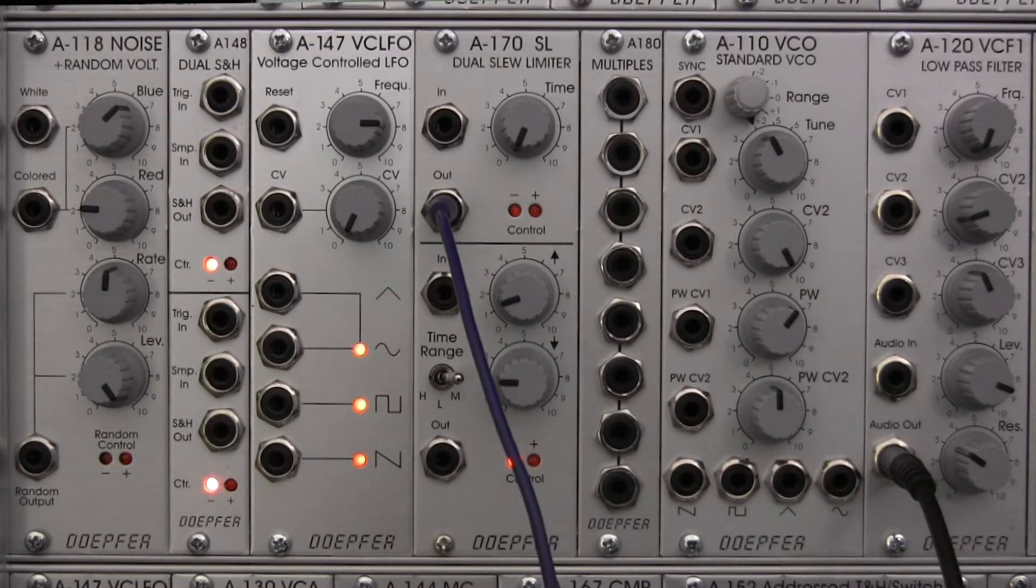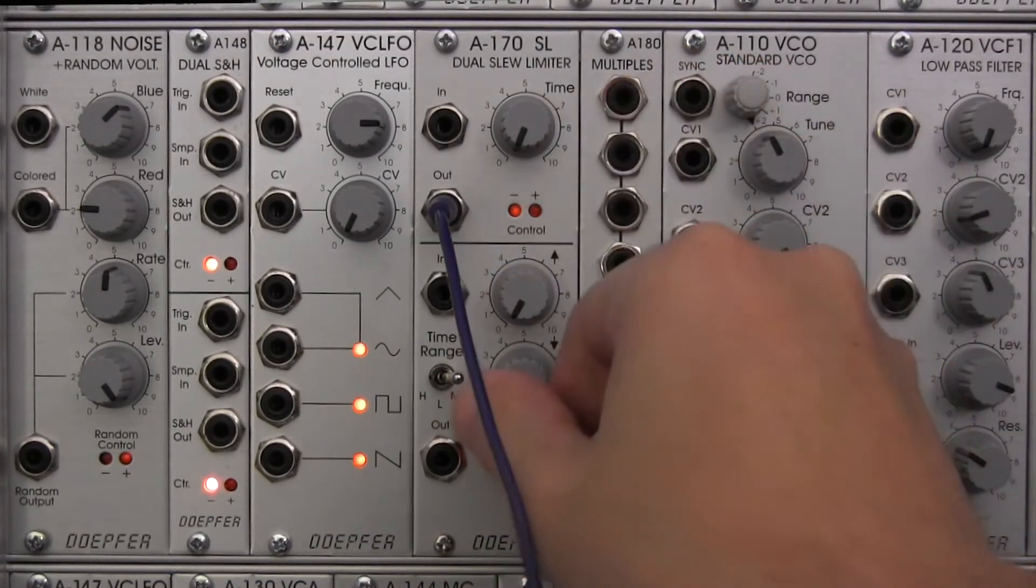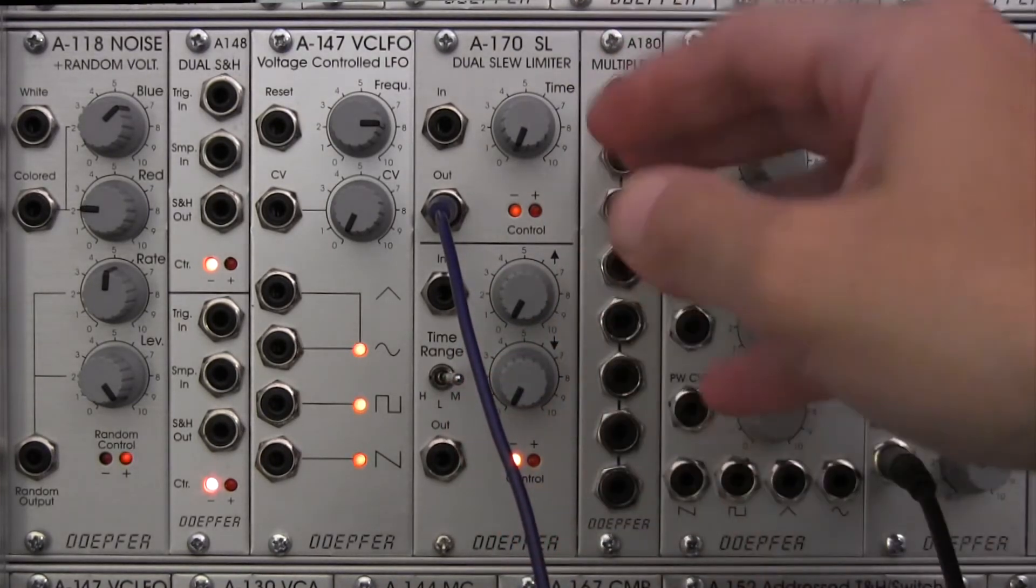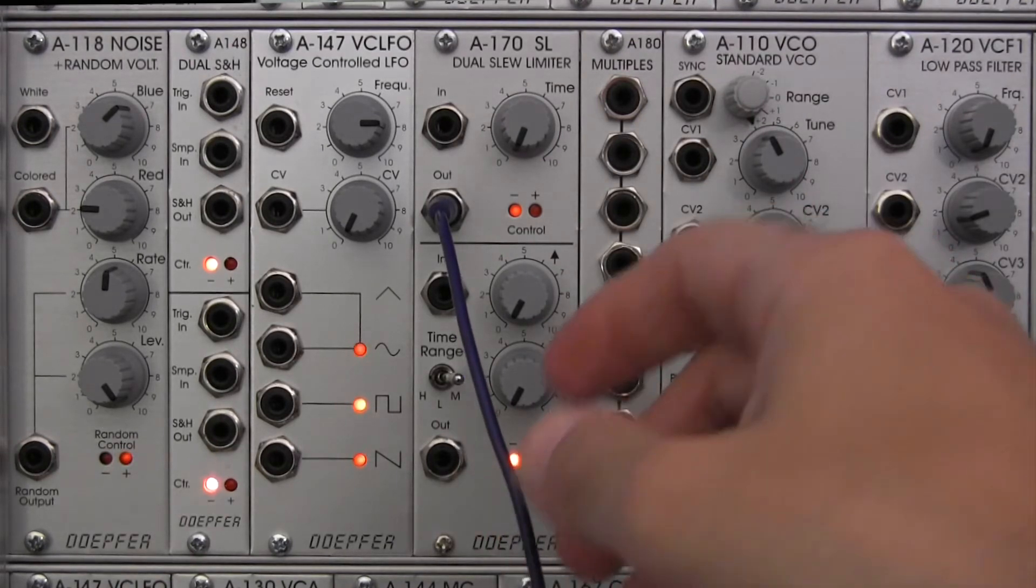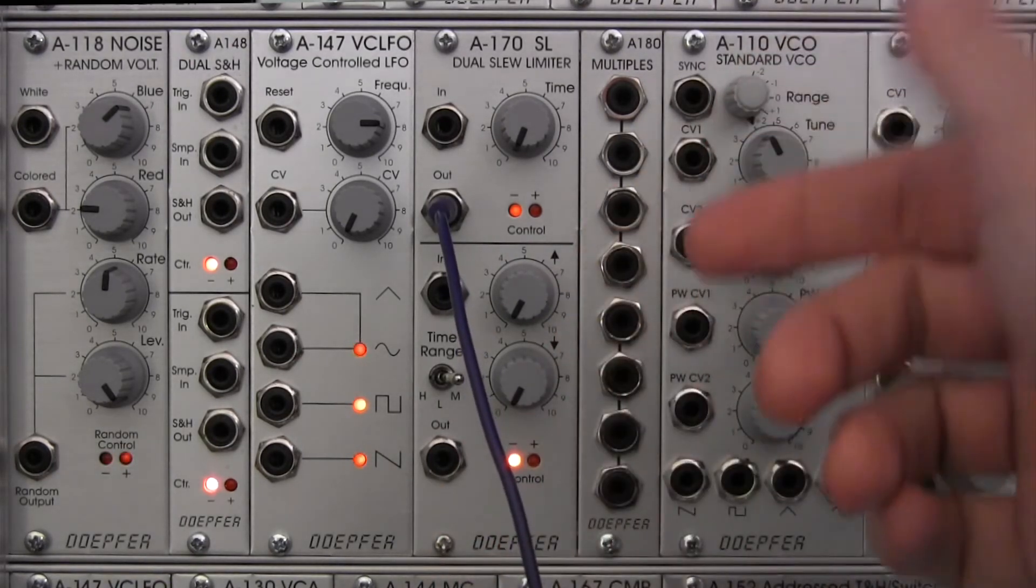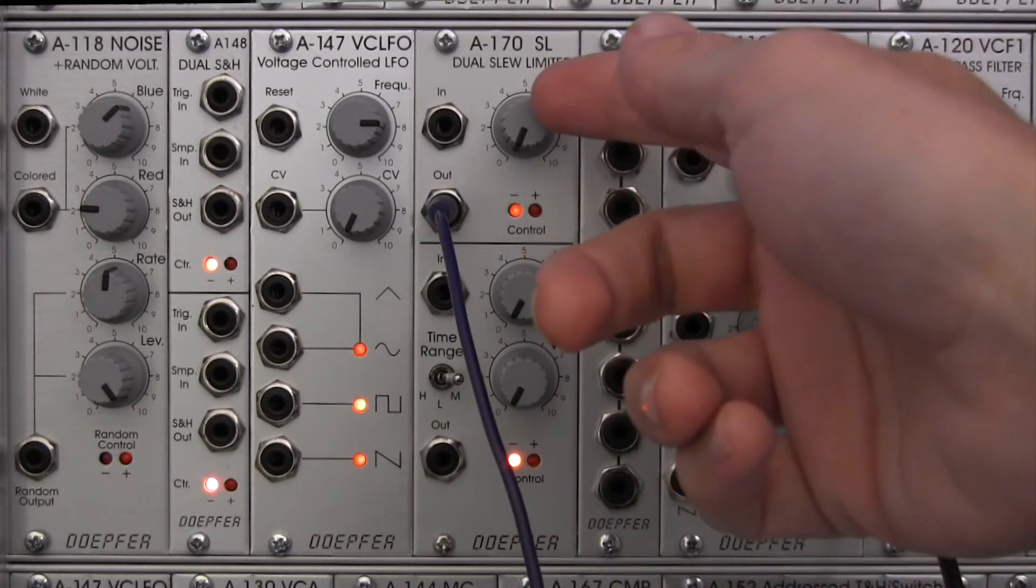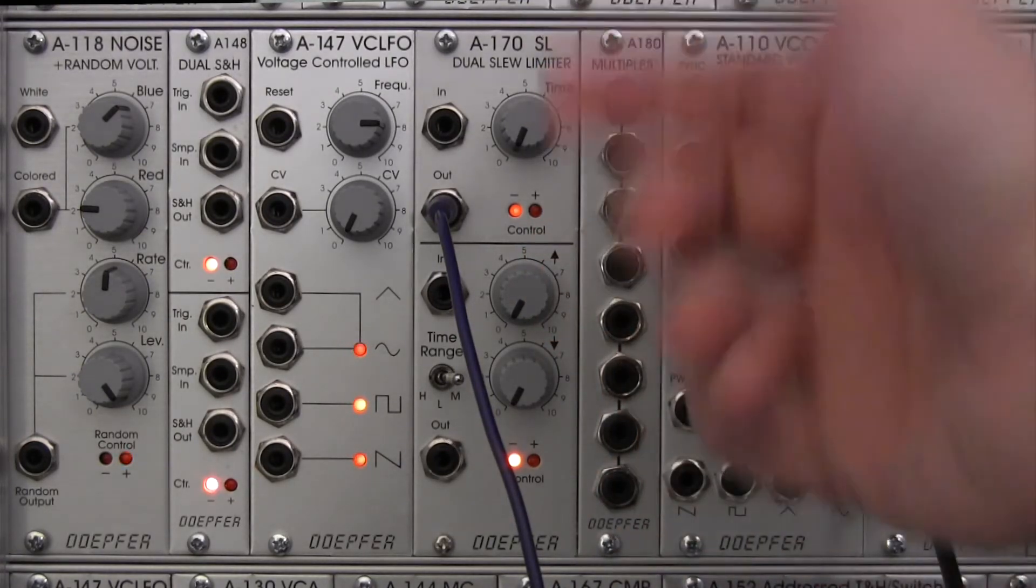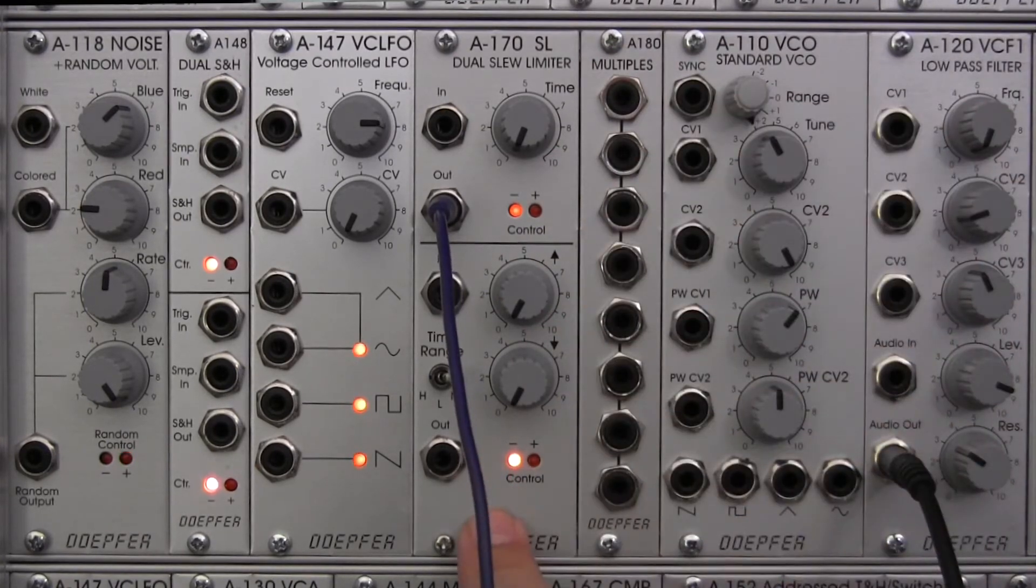So let's take a look at now the bottom slew limiter. This one's going to be pretty close to the same. It is going to be less ideal for controlled modulations in terms of like if you're trying to go one volt per octave, you're going to use the top one that we were just doing. But otherwise, if you're not doing it for that, like just basic modulation, you can use the bottom one.